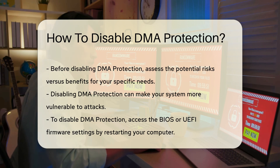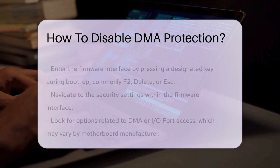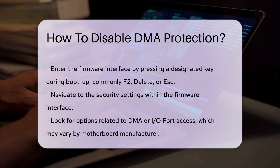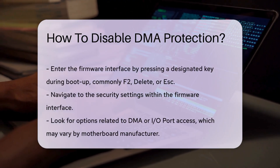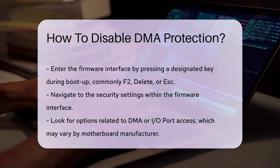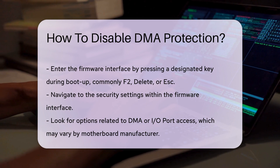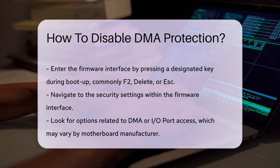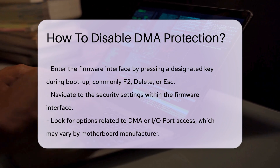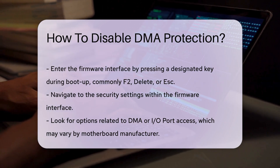To disable DMA protection, you typically need to access the BIOS or UEFI firmware settings. Restart your computer and enter the firmware interface by pressing a designated key, often F2, Delete, or S during boot up. Once inside, navigate to the security settings. Look for options related to DMA or IO port access. The exact terminology may vary based on your motherboard manufacturer.